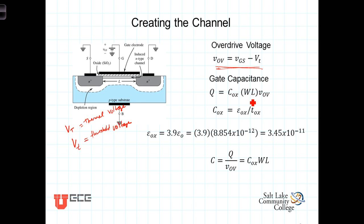COX, this oxide capacitance, is equal to epsilon of the oxide divided by the thickness of the oxide. And the permittivity of the oxide is equal to 3.9 times the permittivity of free space, so that's 3.9 times the permittivity of free space.